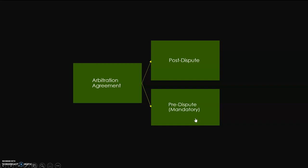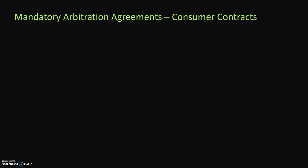The other type is called pre-dispute arbitration, which is a mandatory process. Pre-dispute arbitration means that parties have already agreed to a contract in which they have agreed that if there is a dispute between the parties, the only way they will resolve that dispute is by going to arbitration — they cannot go to court. This is a mandatory agreement to go to arbitration even before any dispute has arisen. The most problematic example of mandatory arbitration agreements is in consumer contracts.